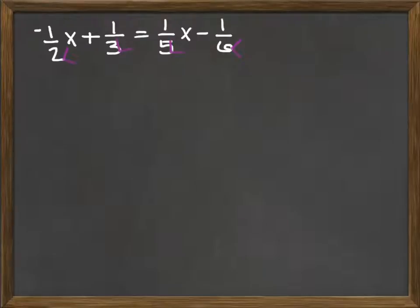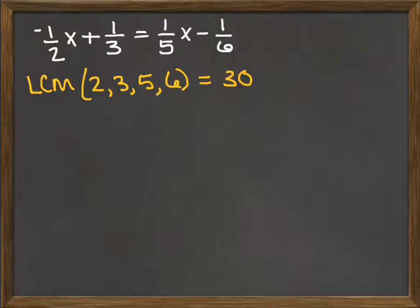So we want to find the least common multiple of the six, the five, the three, and the two. This would be thirty. Since the least common multiple of all of these denominators is thirty, if I multiply both sides of the equation by thirty,